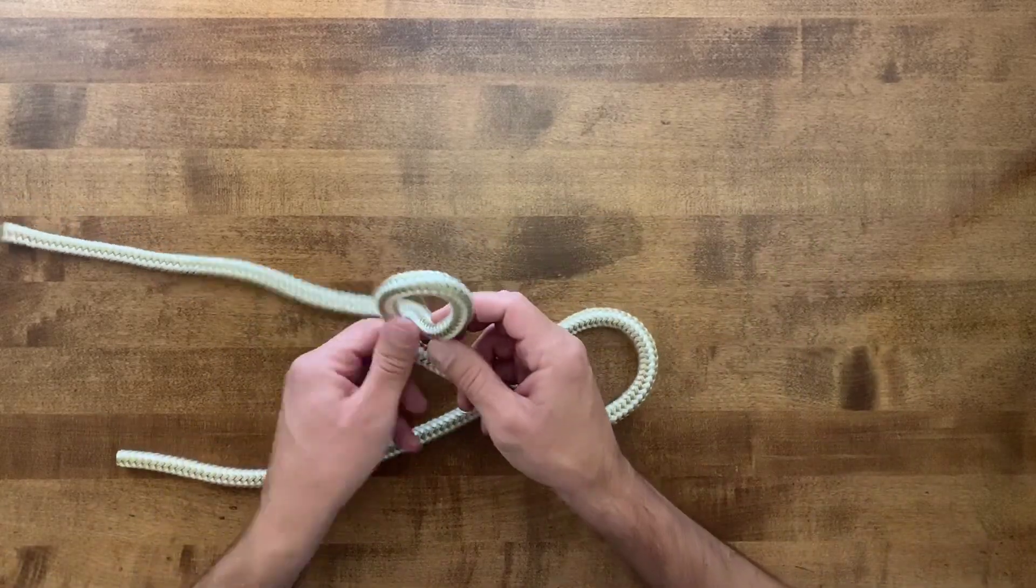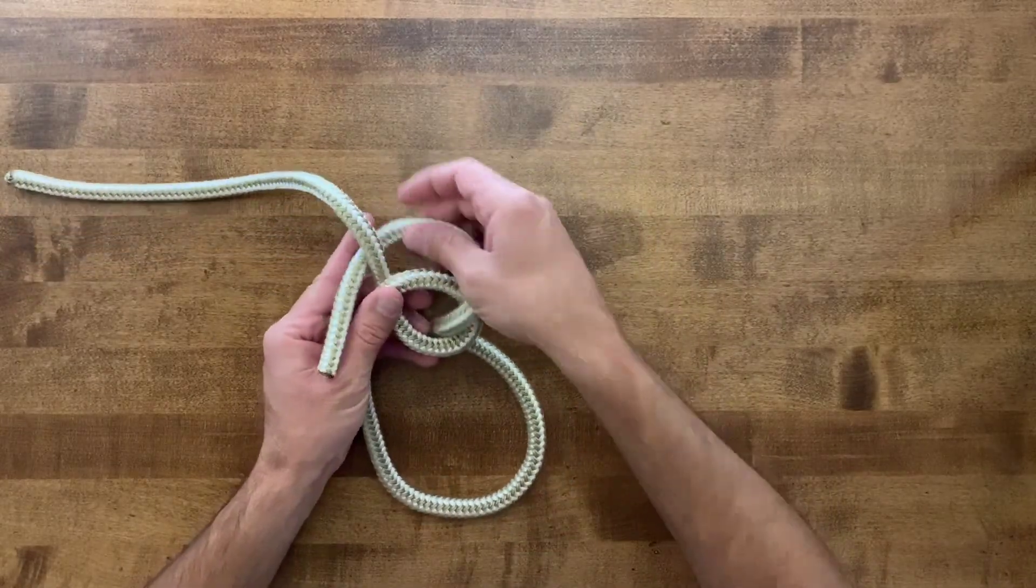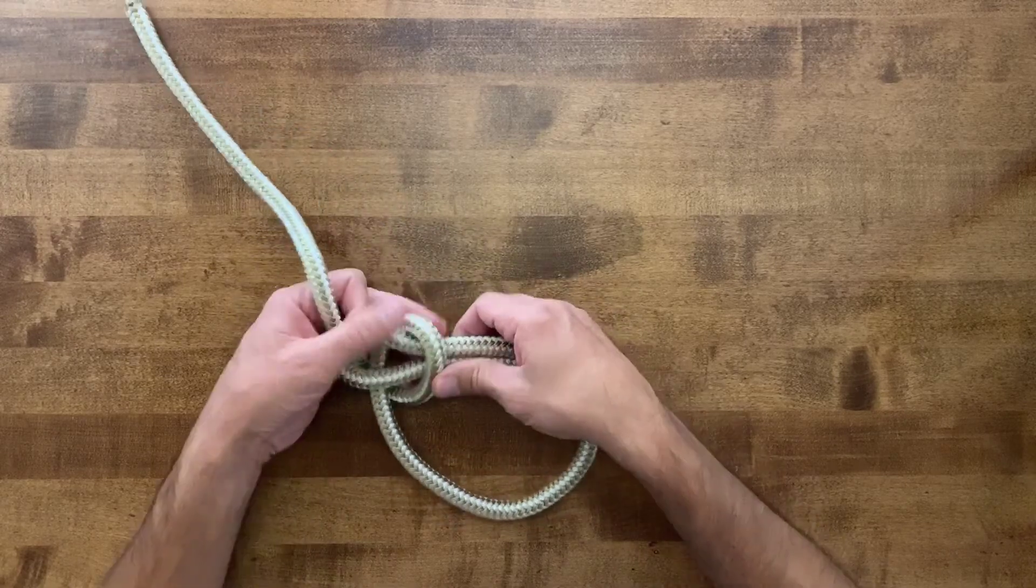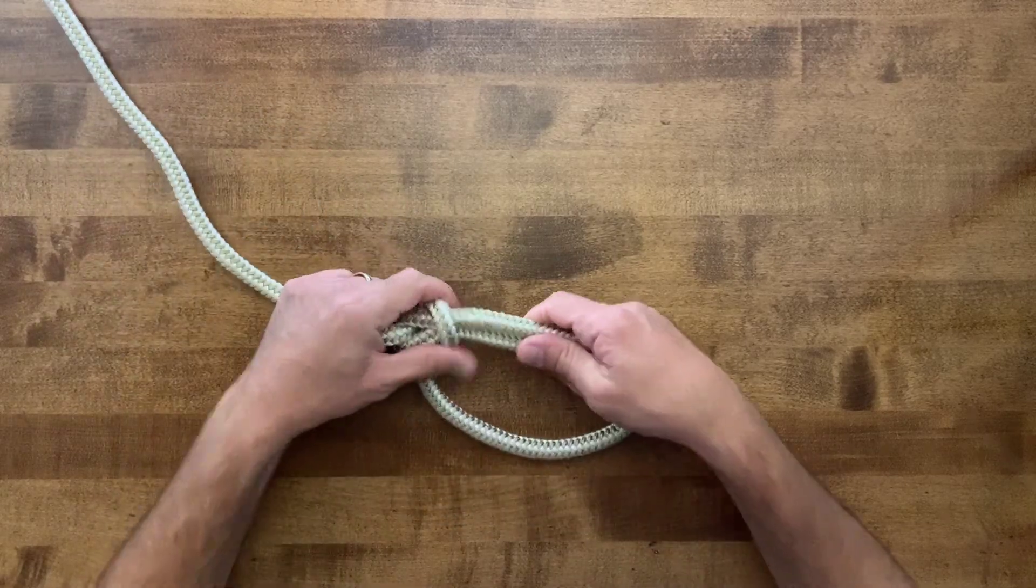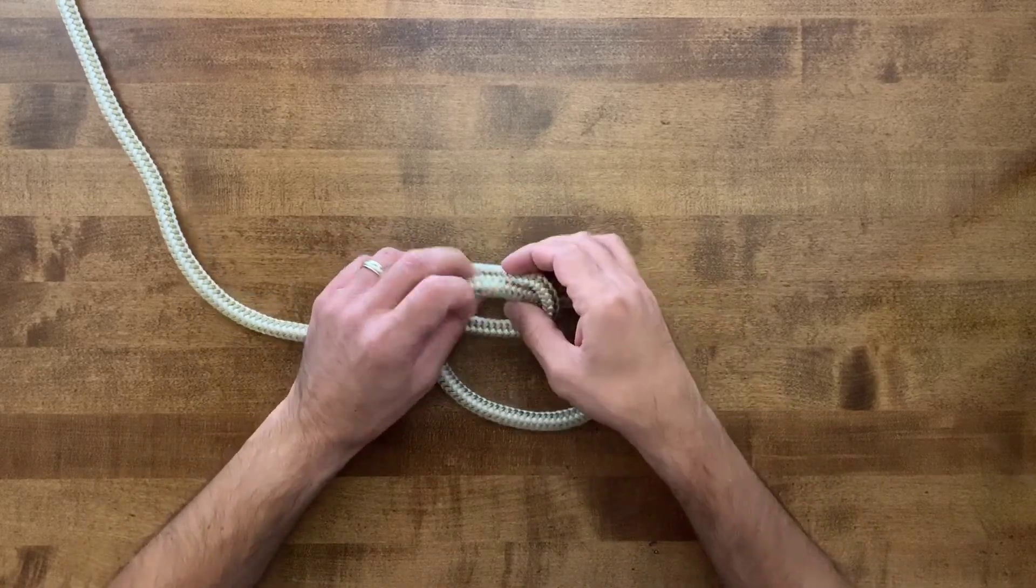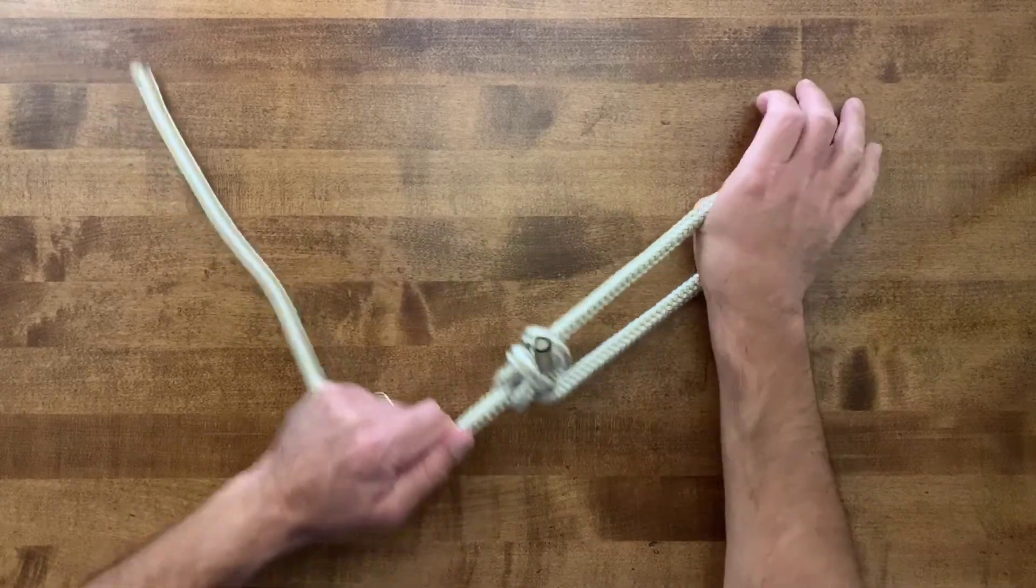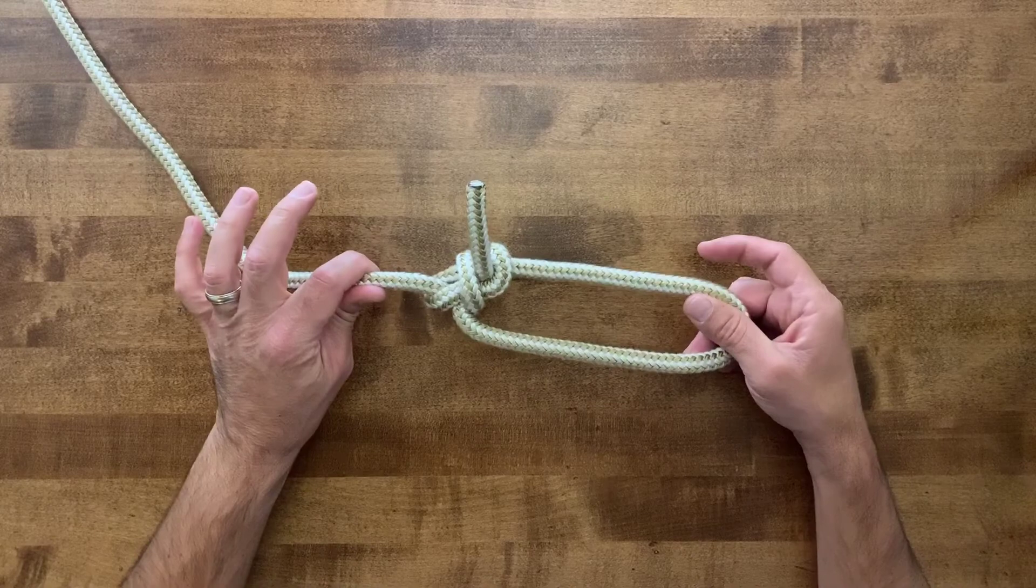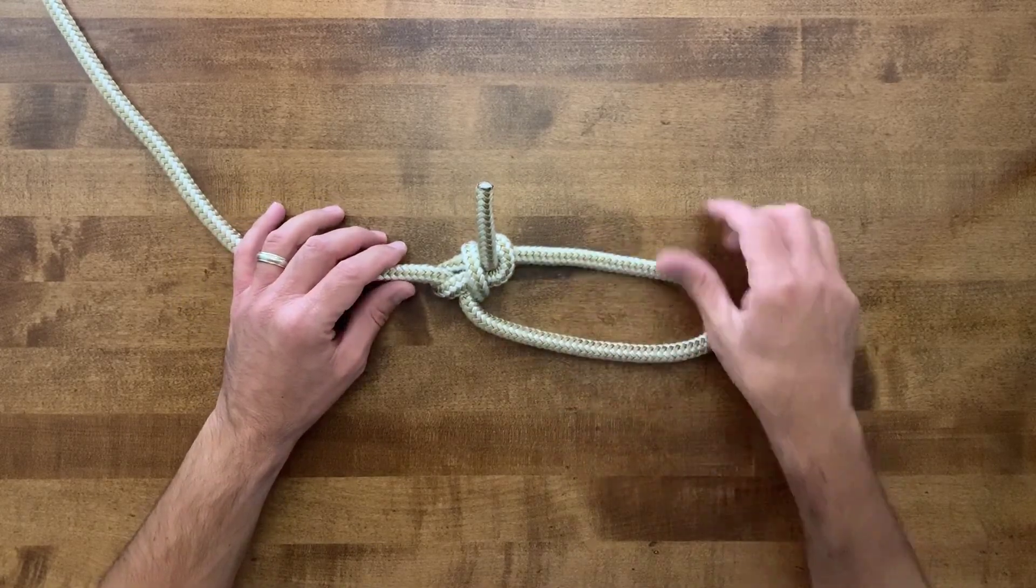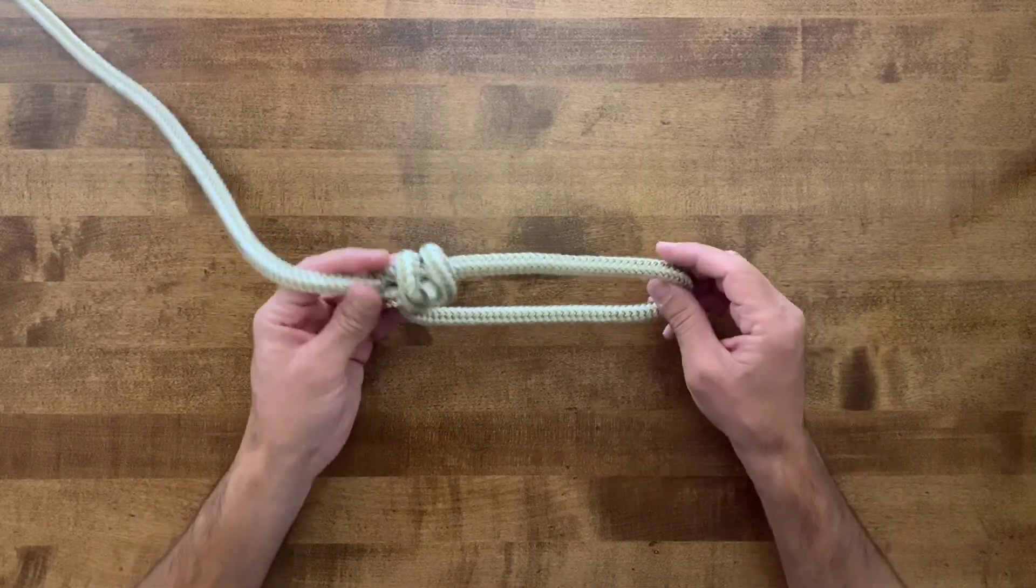Twist two, rabbit goes up through, goes around the tree, and back down through his hole. Pull that tight. Now you have this tag end. With this tag end, you can put a half hitch here, and that'll help secure that knot. Also, you can put a double overhand knot in that tag end. And this makes this knot extremely secure now.